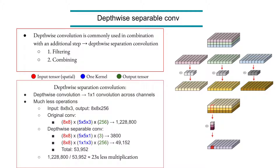But if you split the tensor into multiple channels and apply a 5×5 convolution per channel — since each channel is independent, you only process one channel at a time — you end up with only around 4,000 computations for the filtering step. In that filtering step, the input and output tensor have the same number of channels. However, in CNNs you typically want to increase or decrease the number of channels as you propagate through deeper layers.